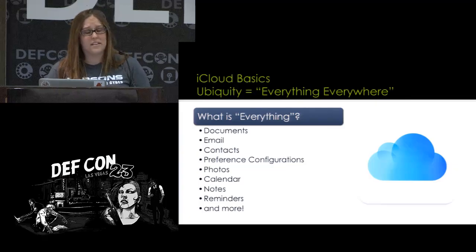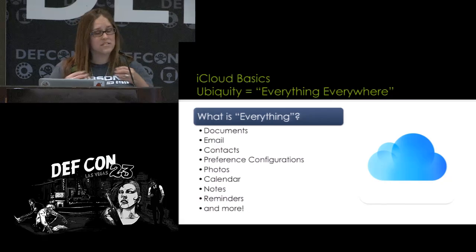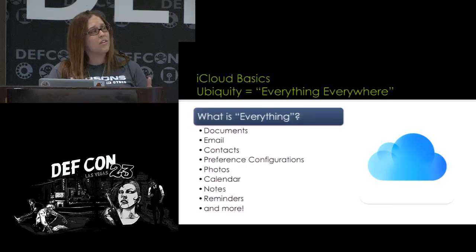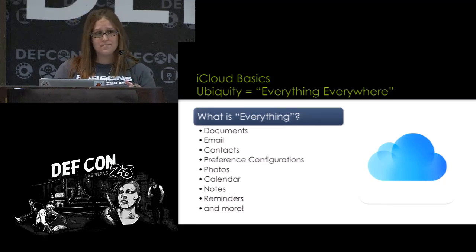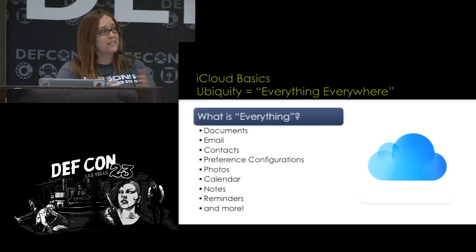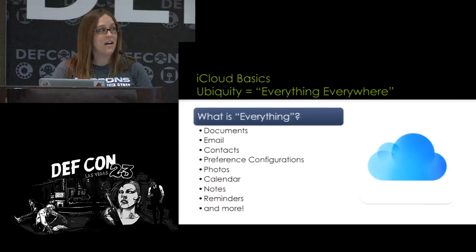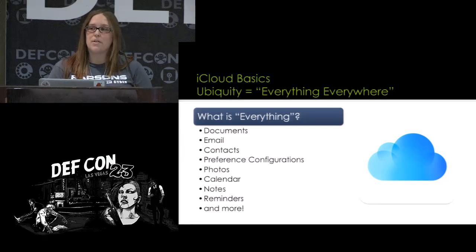Apple uses the term Ubiquity, which basically means everything, everywhere. iCloud really does describe best how it works — you can get your Word documents, email, contacts, messages, preferences, configurations, all sorts of stuff that you probably don't know about. It's hidden under a lot of the underbelly of OS X and iOS. If you use iCloud, you should know what else it's syncing — things that you do not have the choice to opt out of.